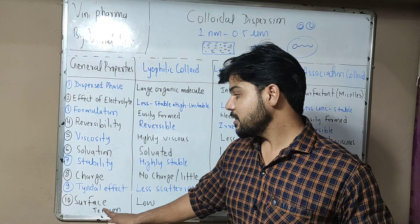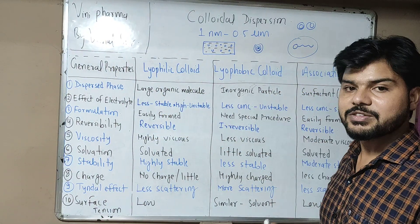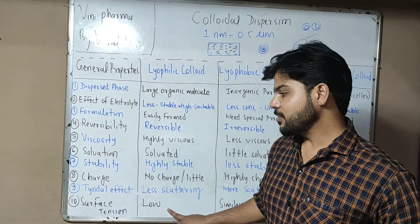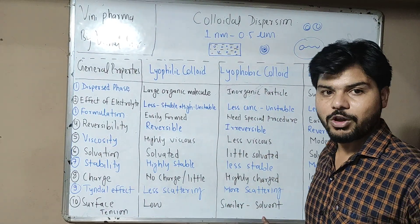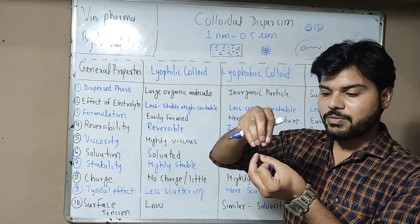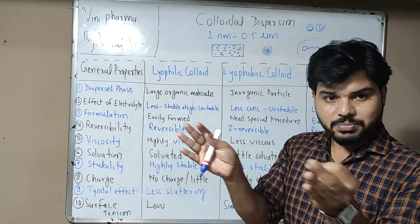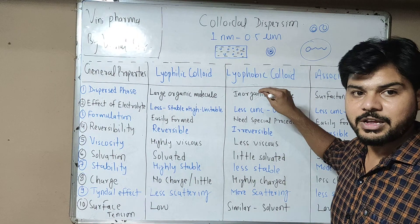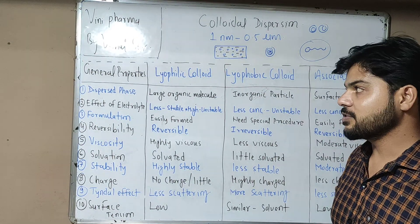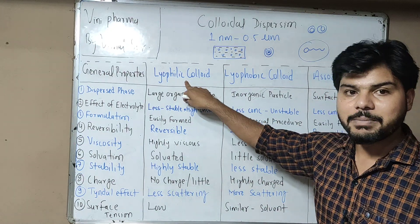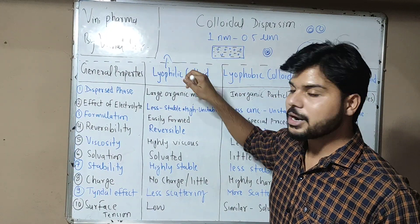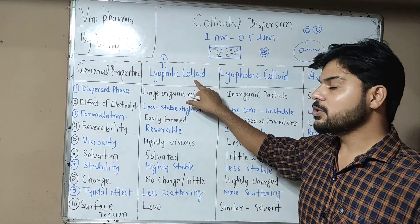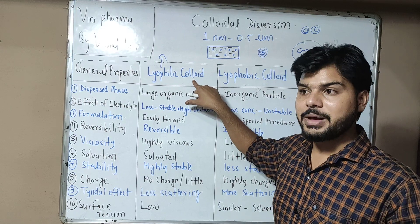Now let's talk about surface tension in all three colloid systems. Lyophilic colloids form polymeric solutions and thus have low surface tension. For lyophobic colloids, since particles do not attach well to the solvent, the surface tension is similar to that of the solvent. Association colloids also have low surface tension. Lyophilic colloids can be further categorized: if the solvent is water, they are called hydrophilic colloids; if the solvent is organic, they are called lipophilic colloids, such as those with benzene.